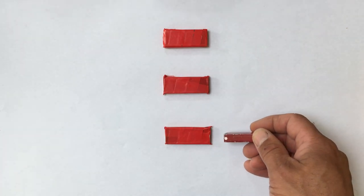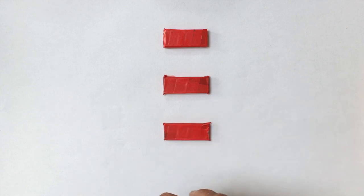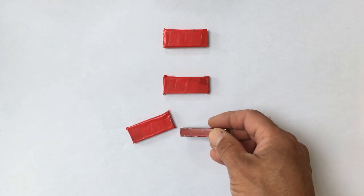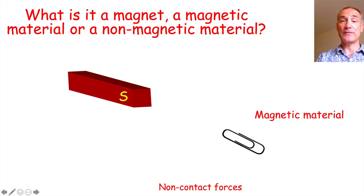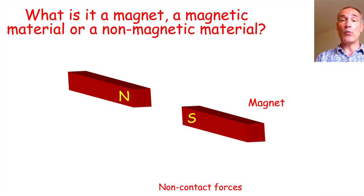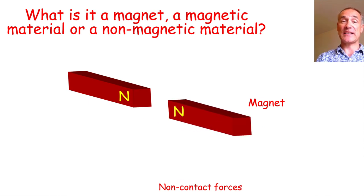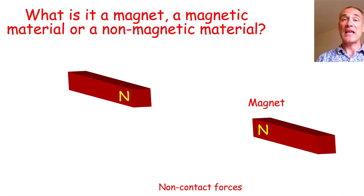And finally the last one attracts one way but when you turn the magnet around it repels — which means it must be a magnet. So a magnetic material is attracted to the north pole and it's also attracted to the south — attracted to both whichever way you turn the magnet. With a magnet, one pole will attract it and if you turn the magnet around the other will repel it. So only magnets will repel each other, and if it's not a magnetic material it won't move at all.